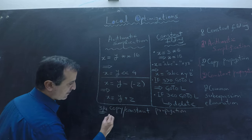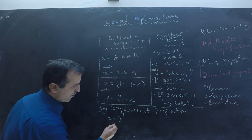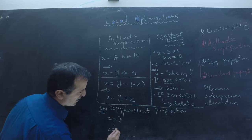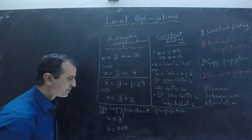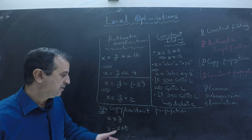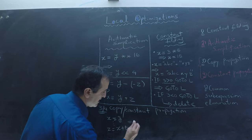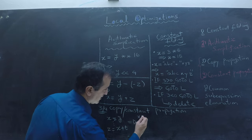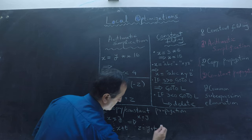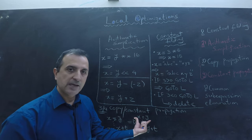If I have an equation x equals to y, followed by another line of code z equals to x plus t, then instead of using x here I will use y directly. So everywhere I am using x, I will replace it with y. These equations transform to x equals to y, followed by z equals to y plus t. The advantage is that maybe later on the first equation becomes redundant and I can remove it.